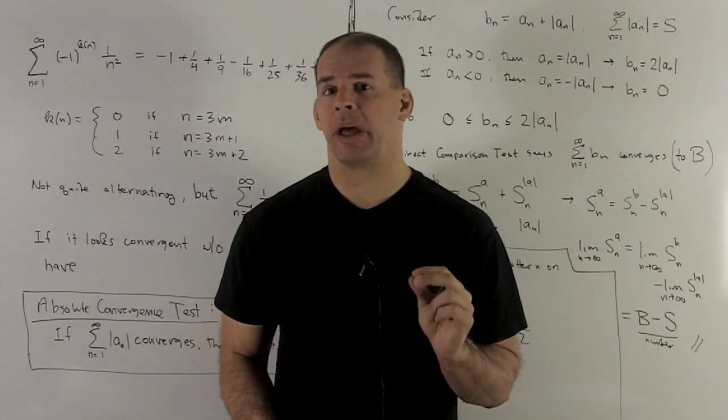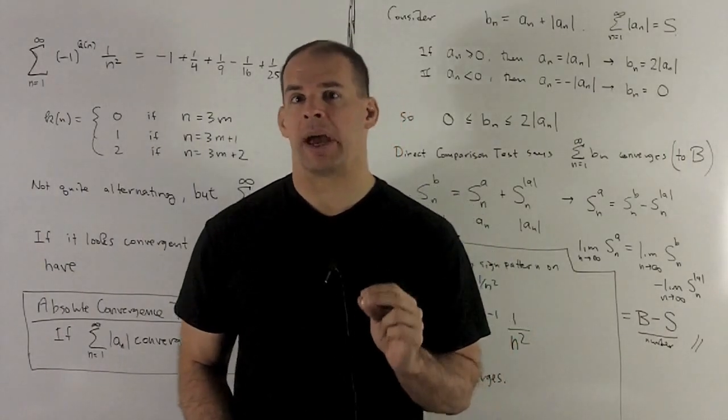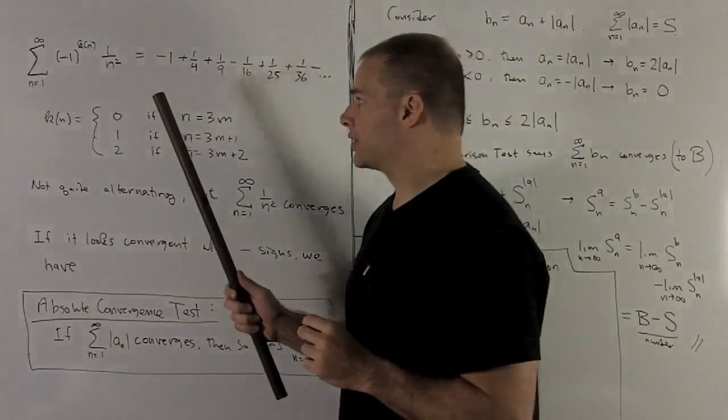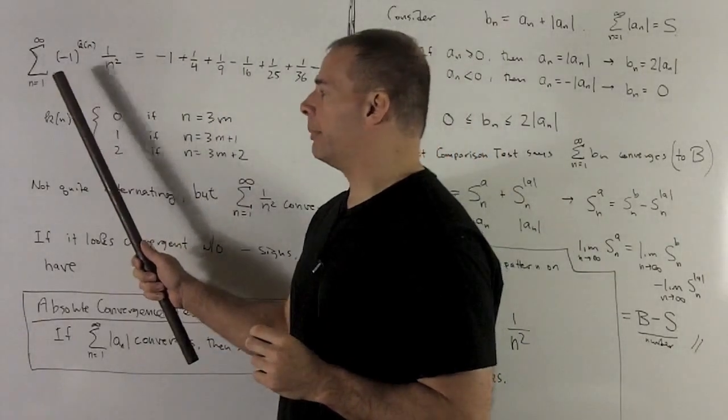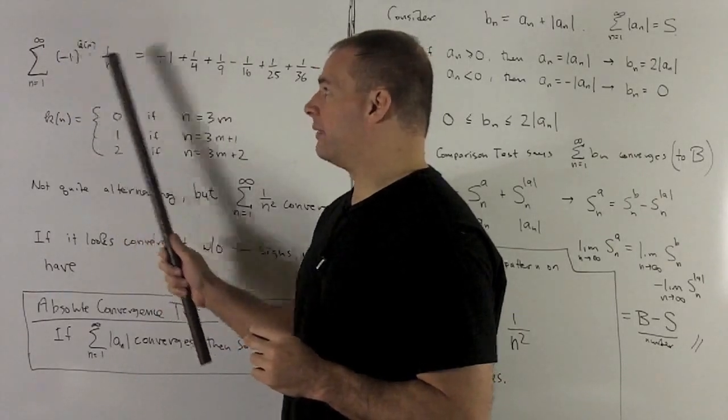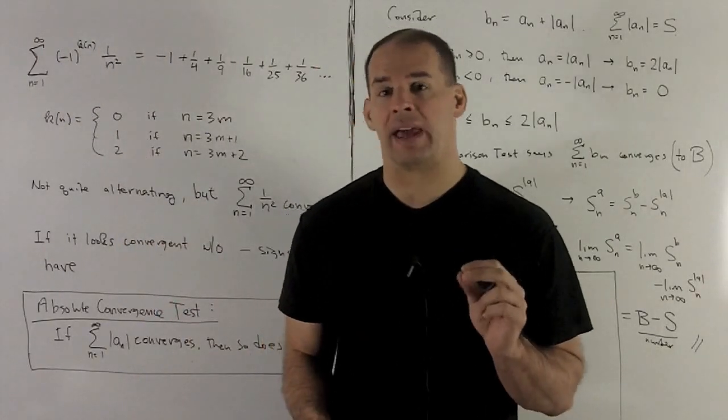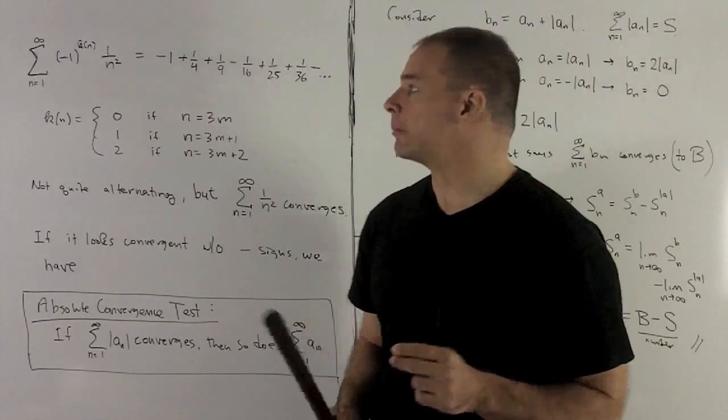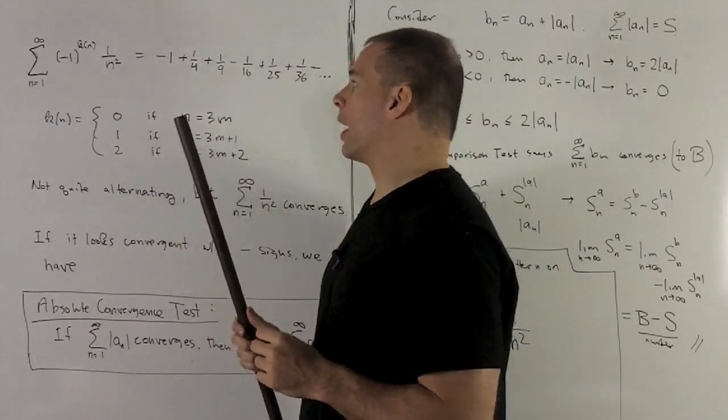Now that we have alternating series under our belt, let's take a look at different sign patterns. So let's consider this series, sum n goes from 1 to infinity, minus 1, and this kn function is just going to be the remainder of n when we divide by 3. And then 1 over n squared.